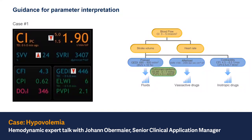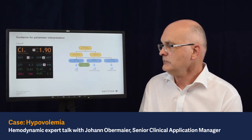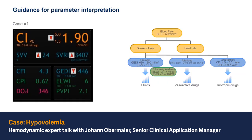What about afterload? Systemic vascular resistance is pretty high, but this can also be an auto-regulatory reaction of the body to the low blood flow. The contractility parameters — cardiac function index and cardiac power index — are both in the normal range, so there seems to be no problem with cardiac function.